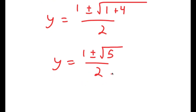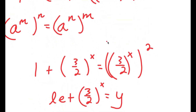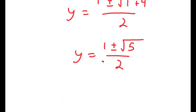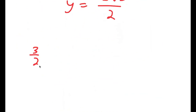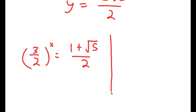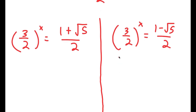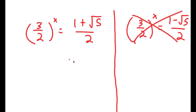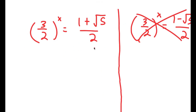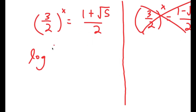So y equals 1 plus or minus square root of 5, over 2. However, we're solving for x, not y, and we set (3/2)^x equal to y. This gives two equations: (3/2)^x equals (1 plus √5)/2, and (3/2)^x equals (1 minus √5)/2. We can eliminate the second equation because 1 minus √5 is negative, and a positive base raised to any power cannot equal a negative number. So I take the log of both sides of the remaining equation.